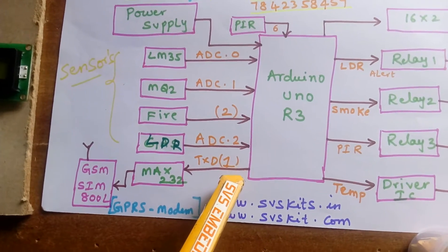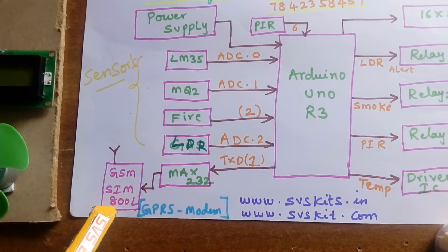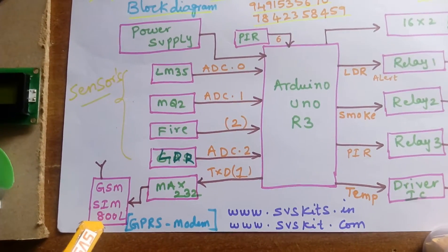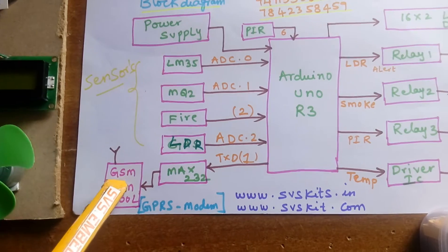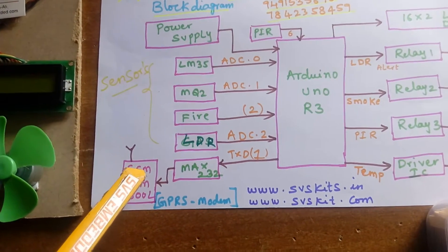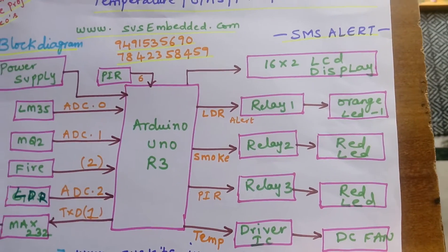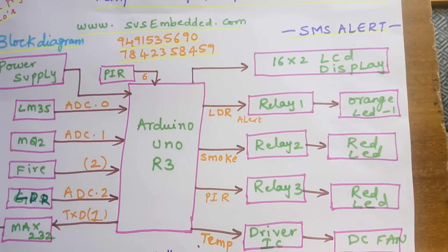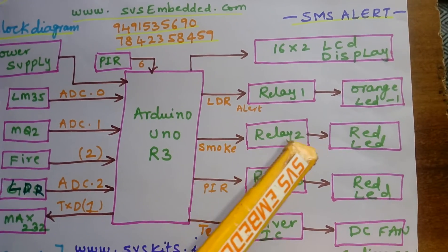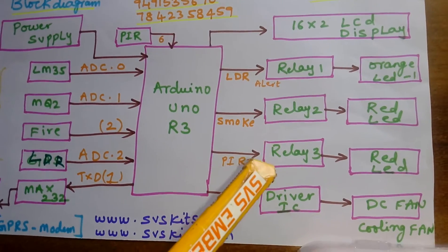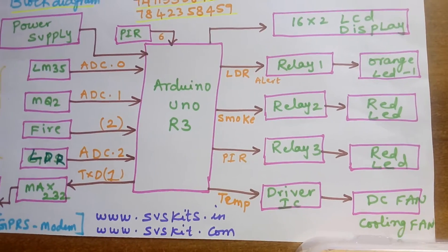I am connecting with the TX/RX pins of MAX232 and using a GPRS modem SIM800L, enabling internet connectivity using a SIM card. The outputs include an LDR alert relay with orange LED, smoke alert red LED, PIR alert red LED, temperature alert driver, AC, and a cooling fan.